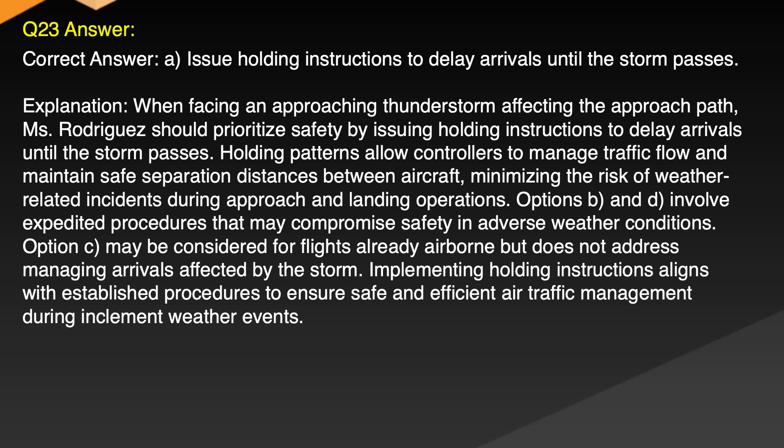Explanation: When facing an approaching thunderstorm affecting the approach path, Emes Rodriguez should prioritize safety by issuing holding instructions to delay arrivals until the storm passes. Holding patterns allow controllers to manage traffic flow and maintain safe separation distances between aircraft, minimizing the risk of weather-related incidents during approach and landing operations. Options B and D involve expedited procedures that may compromise safety in adverse weather conditions. Option C may be considered for flights already airborne but does not address managing arrivals affected by the storm. Implementing holding instructions aligns with established procedures to ensure safe and efficient air traffic management during inclement weather events.